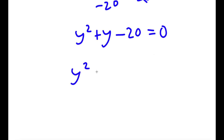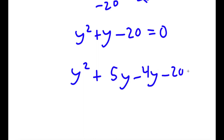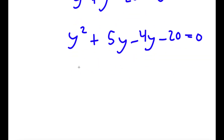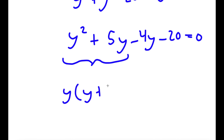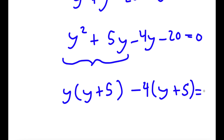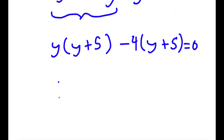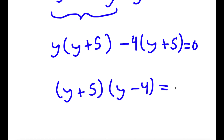So now all we have to do is factor this out. y can be rewritten as 5y minus 4y. Factoring by grouping: from y squared plus 5y, I factor out y to get y times (y plus 5), and from 4y minus 20, I factor out negative 4 to get negative 4 times (y plus 5). So factoring out (y plus 5) gives (y plus 5)(y minus 4) is equal to 0.